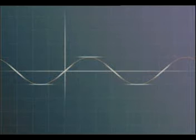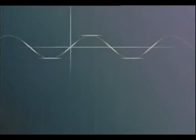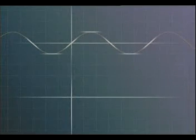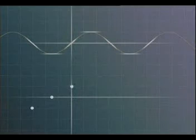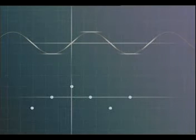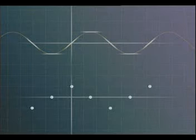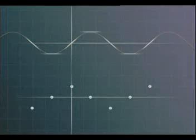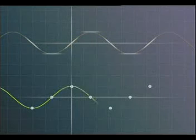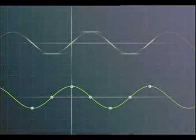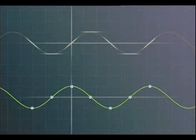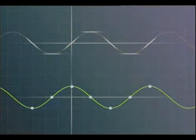Let's now plot the gradients of these tangents on a graph directly underneath the sine graph. Assuming we can join up the points with a smooth curve, whilst we don't know the values at the peaks and the troughs, what we've drawn looks remarkably like the graph of a cosine function.